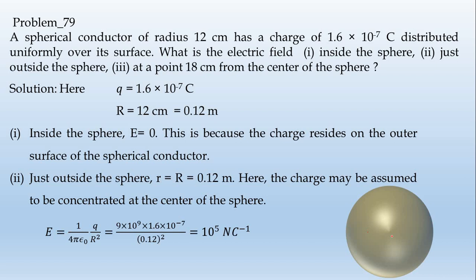Using the formula E equals 1 over 4 pi epsilon naught q over R squared, we can substitute to get 10 to the power 5 Newton per coulomb.